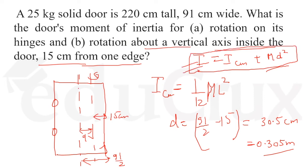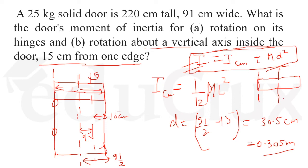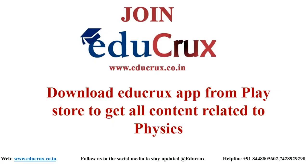To summarize: when the door rotates about its hinge it behaves like a rod of that length, giving 1/3 × m × L². For a vertical axis through the center of mass it's 1/12 × m × L², and through one end it's 1/3 × m × L². We used these properties and the parallel axis theorem to solve this question. Thank you for watching — please subscribe to our channel to learn more about physics.